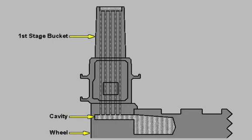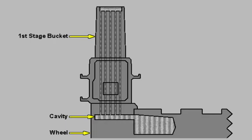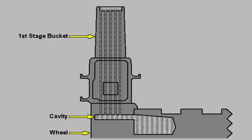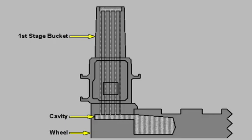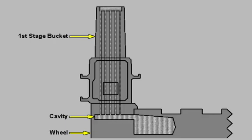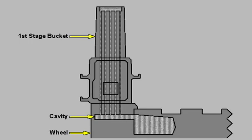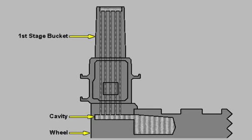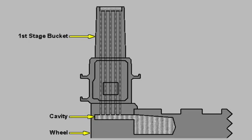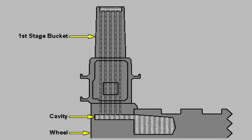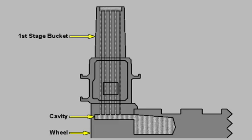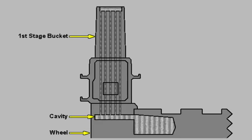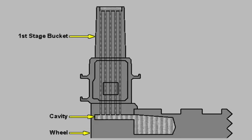Cooling air enters each first and second stage bucket through a cavity between the wheel and the base of the bucket dovetail. Cooling air flows through the longitudinal air passages and exits from holes at each recessed bucket tip.